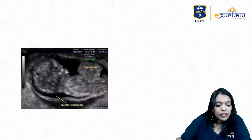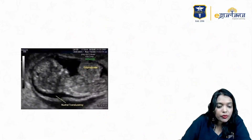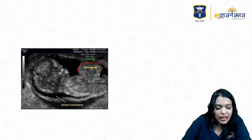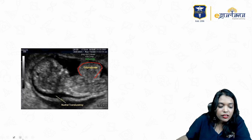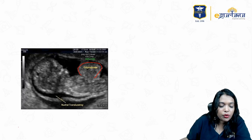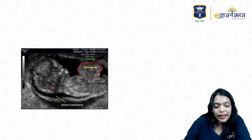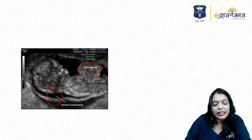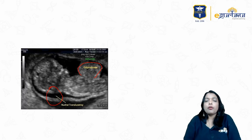Now see the next picture — this one is an omphalocele. Here there is a sac covering it, arising from the umbilicus, and it's regular. Whenever there is a sac arising from the umbilicus, you can go for omphalocele. In this picture also, if you observe, there is increased nuchal translucency.